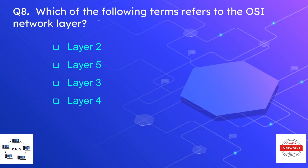Question number eight is: which of the following terms refers to the OSI network layer? Options are layer two, layer four, layer three, and layer four — and the answer is layer three.